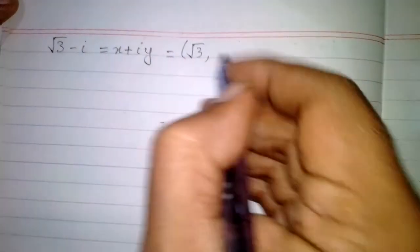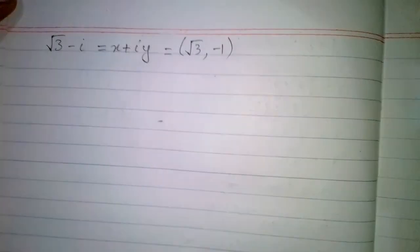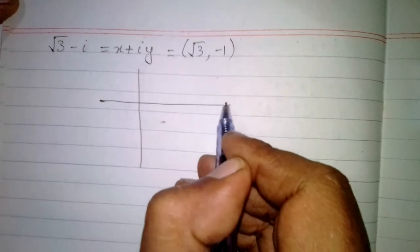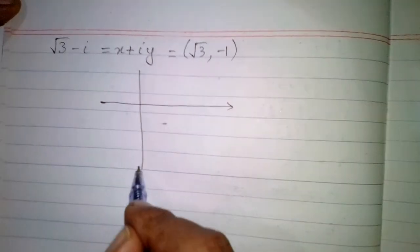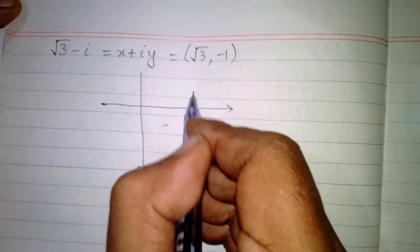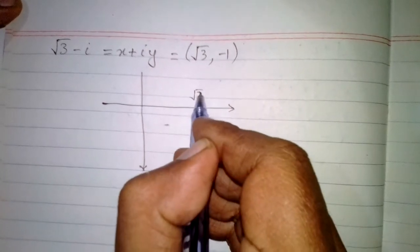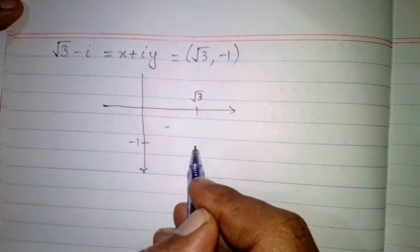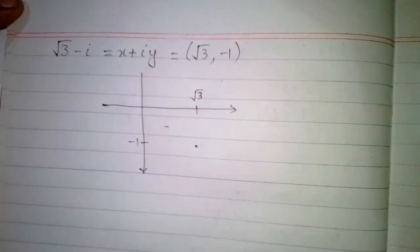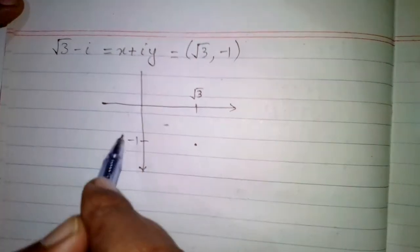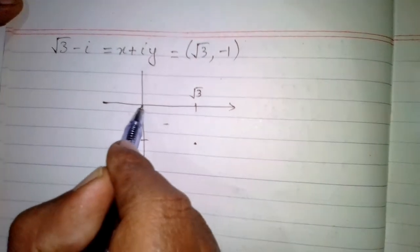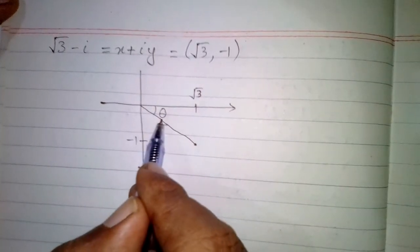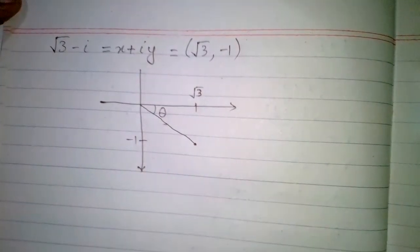The imaginary part is the y component. We can plot this point on a complex plane, where the x component is √3 and the y component is minus 1. This point lies in the fourth quadrant of the plane, and it makes an angle theta with the x-axis.